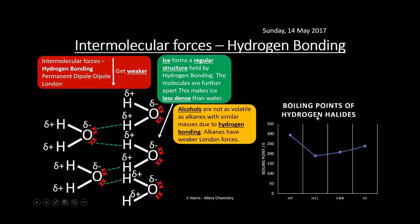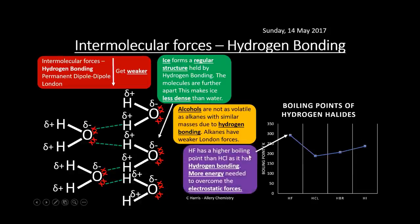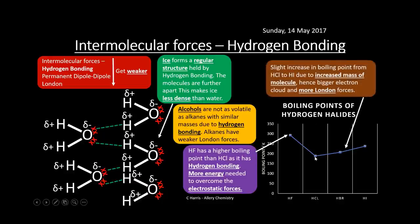Looking at boiling points of hydrogen halides: HF has the highest boiling point because it has hydrogen bonding, requiring lots of energy to overcome. The others (HCl, HBr, HI) don't have hydrogen bonding, so they have lower boiling points involving permanent dipole-dipole and London forces. However, boiling points gradually increase from HCl to HI because as we go down, we have bigger halide ions with larger London forces, increased molecular mass, and higher intermolecular forces.